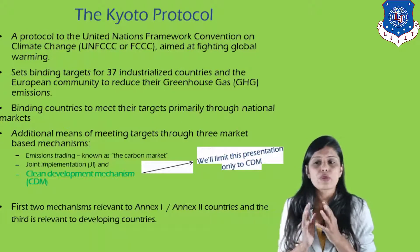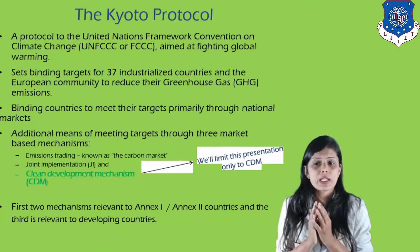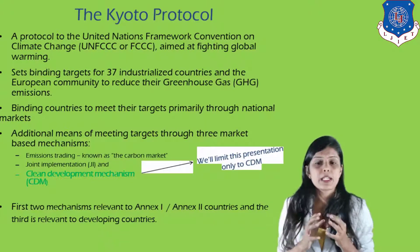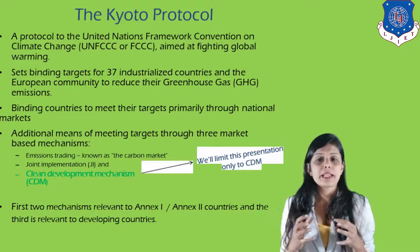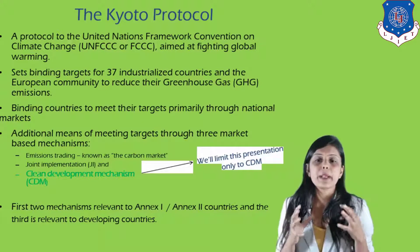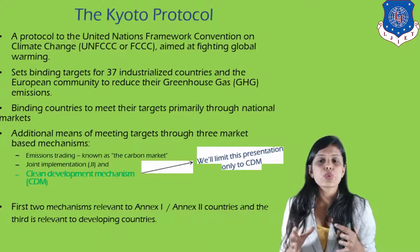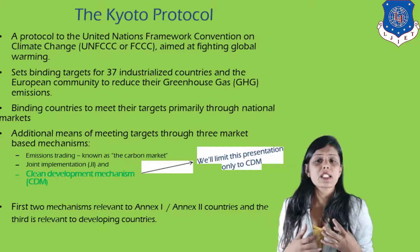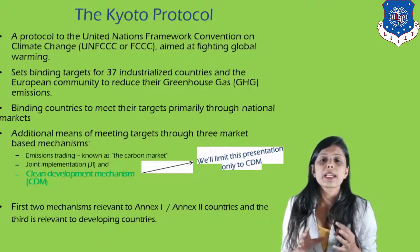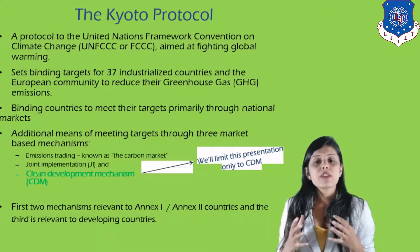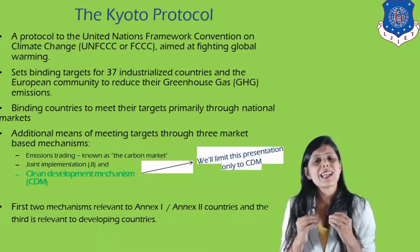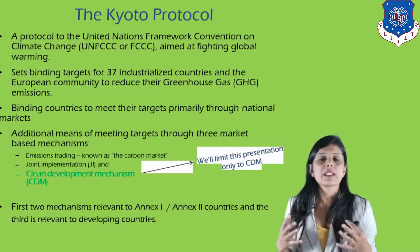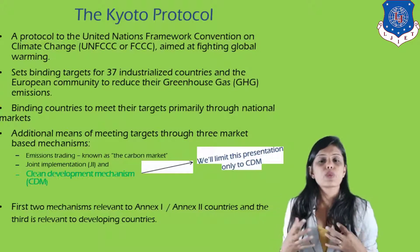The Clean Development Mechanism and Kyoto Protocol depend on emission trading — knowing how much carbon is released by producing different products. Joint Implementation involves countries joining together to reduce carbon emissions. The first two mechanisms are relevant to NX1 and NX2 countries, and the third is relevant to developing countries. NX1 and NX2 countries are industrialized nations, while developing countries are still not fully industrialized and release less carbon dioxide compared to developed countries whose industries release large amounts of CO2.